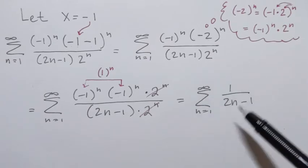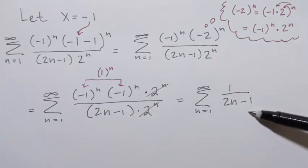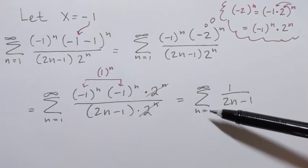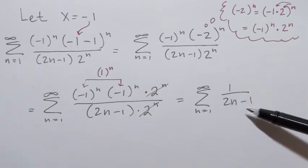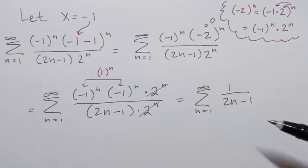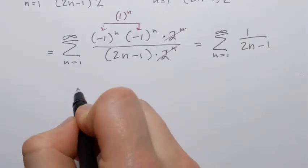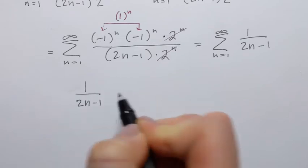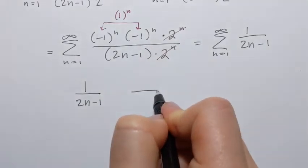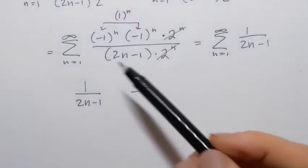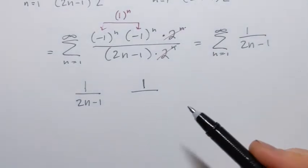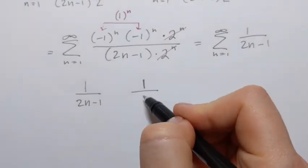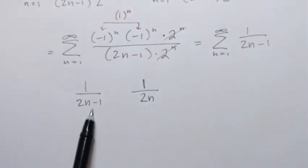We obtained the series with terms 1 over 2n minus 1, which are always positive, so we can apply the comparison test. We compare 1 over 2n minus 1 to 1 over 2n. Since the denominator 2n minus 1 is smaller than 2n, the term 1 over 2n minus 1 is greater than or equal to 1 over 2n.